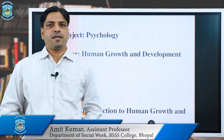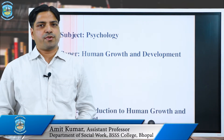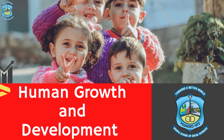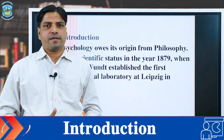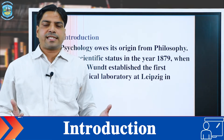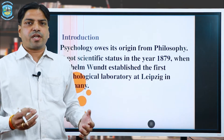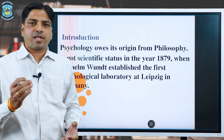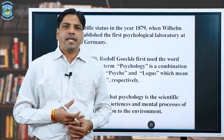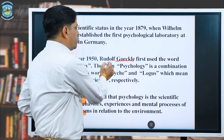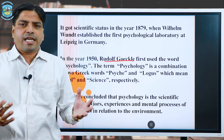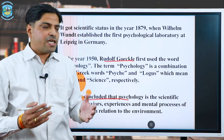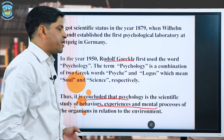Hello everyone. I, Amit Kumar, Assistant Professor in the Department of Social Work at the Bhopal School of Social Sciences, welcome you all to this lecture series on psychology. The topic of today's presentation is human growth and development. Psychology is not a very old concept; its origin started with the Industrial Revolution and it got scientific status only after 1870 when William Wundt established the first laboratory in Leipzig, Germany. It got legal status only after 1950 when Rudolf Goeckle first used the word psychology. Psychology is basically the study of soul and mind, and thus it can be concluded that psychology is the scientific study of behavior, experience, and mental processes of the organism in relation to the environment.